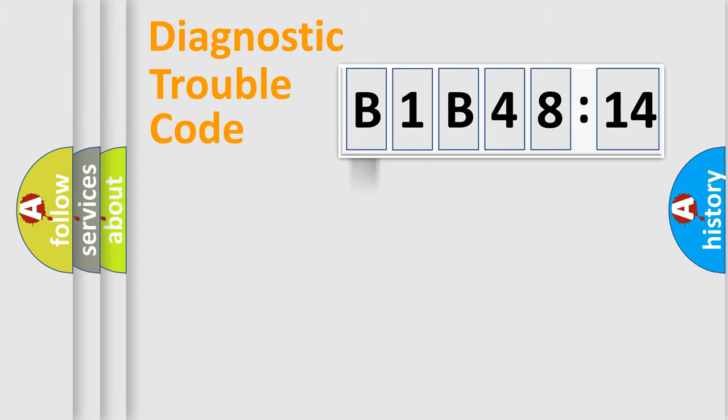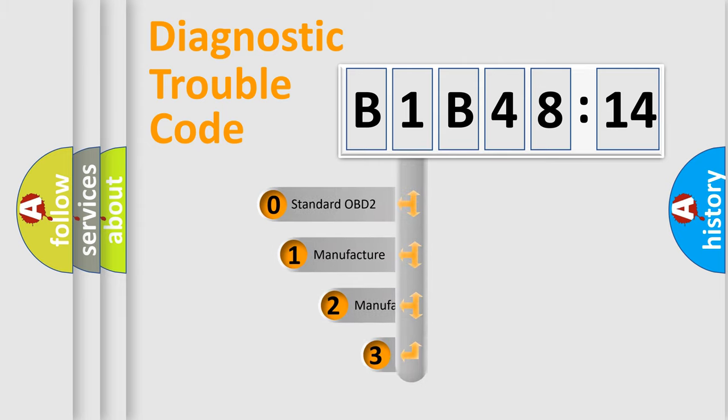Powertrain, Body, Chassis, Network. This distribution is defined in the first character code.